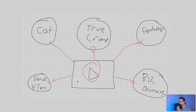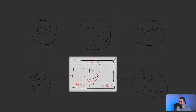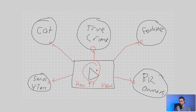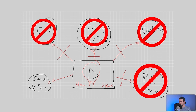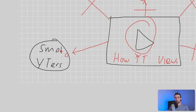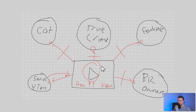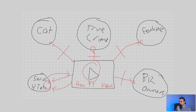Let's say this piece of content is a video or short about how to get YouTube views. YouTube's going to test it with a bunch of different people. When it promotes our video to cat lovers, they're not interested. Crime viewers are not interested. Fortnite viewers are not interested. Business owners are not interested. However, when it promotes it to our small YouTuber audience, they want to get more views and respond positively — they click, they watch, they engage. The algorithm sees something positive happening and starts promoting this video more to small YouTubers, then to an even larger percentage of that audience. And that's how a video gets more and more views.